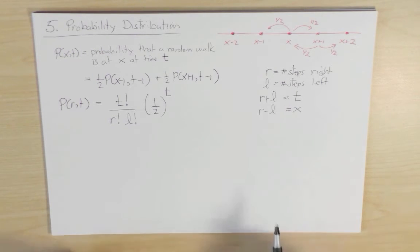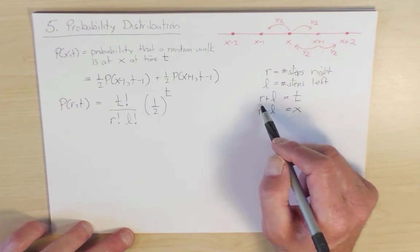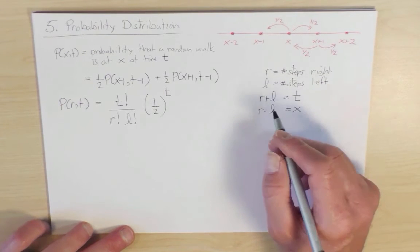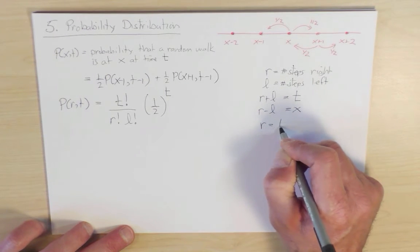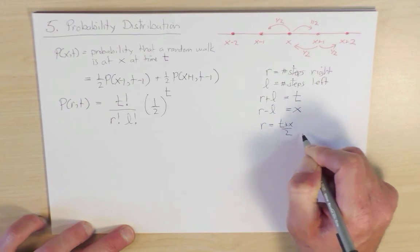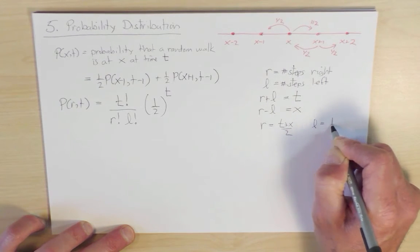But now using this relation between r, l, and t and x, we can compute r is equal to t plus x over 2, and similarly l is equal to t minus x over 2.